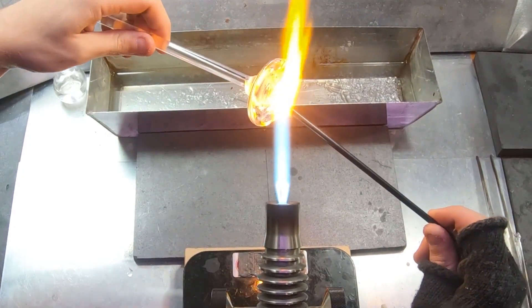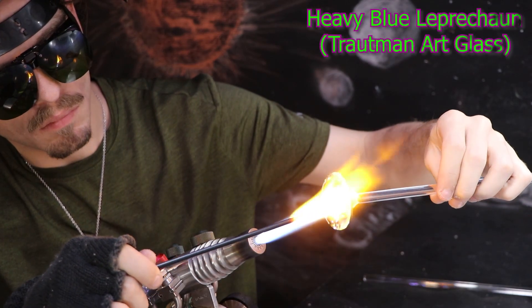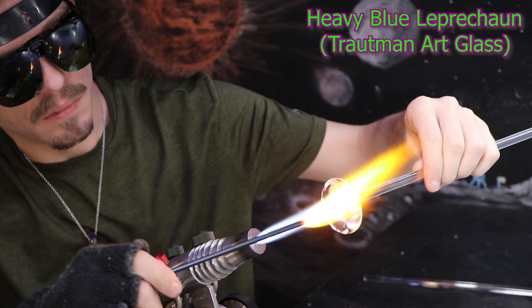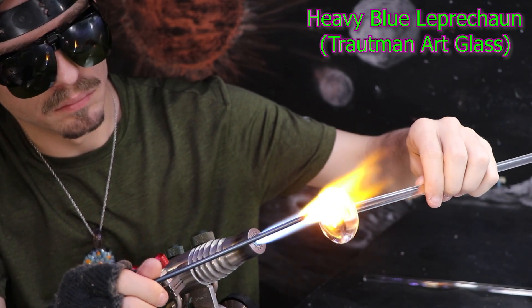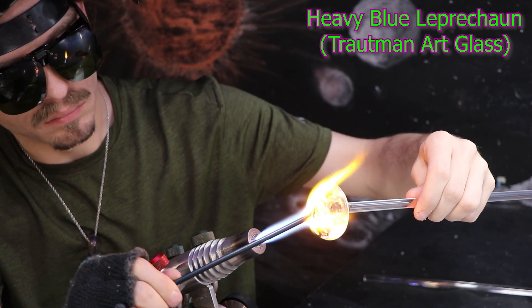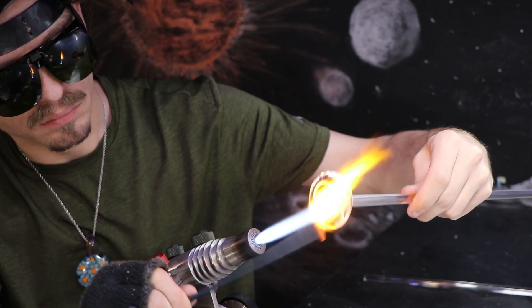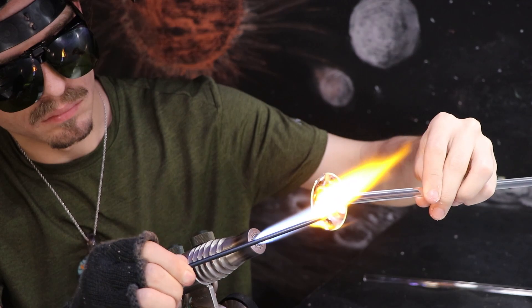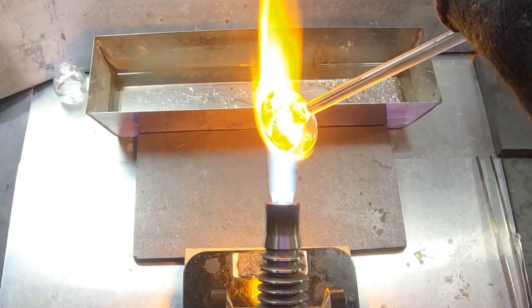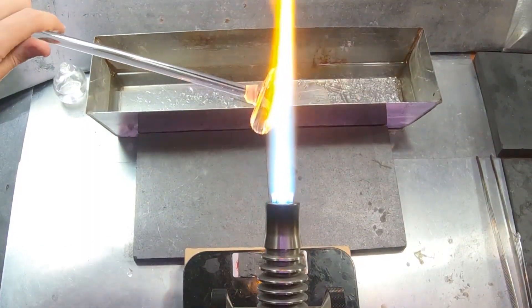Now I'll begin to apply some dots of Heavy Blue Leprechaun. It's a dense adventuring color with a lot of sparkle. It's very problematic in an implosion. Its coefficient of expansion will be slightly different than the clear glass, and so there might be a slight struggle for space between the two.